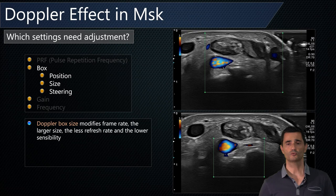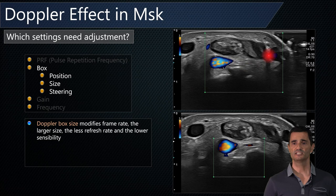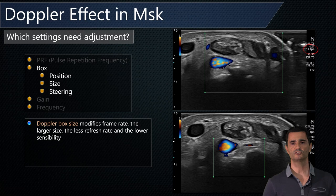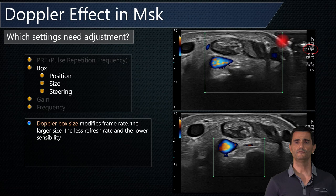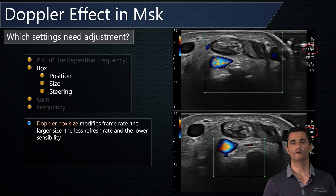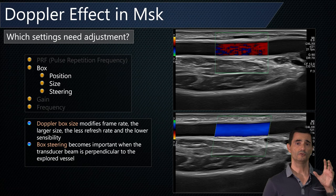You can use the Doppler box — place it where you want to investigate the Doppler and adjust its size. You may think a bigger box is better because you see more vessels, but with bigger boxes the frame rate decreases and you will have a poorer image with slow flows. To get a good image with good Doppler movement, make the box smaller so the frame rate increases and you get a better result. Also, remember to steer the box when you have perpendicular vessels at 90 degrees to get a better view in color Doppler.